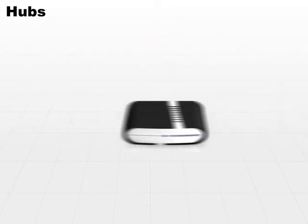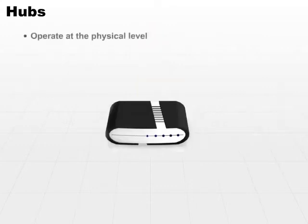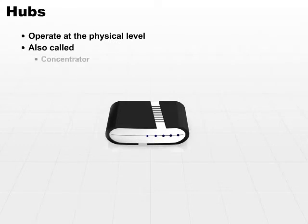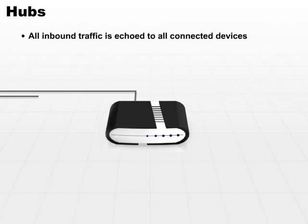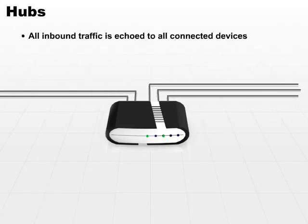Let's start off with the hub. The hub is a lowly device that operates at the physical level. Sometimes it's also referred to as a concentrator, a repeater, or a multi-station access unit, often referred to as a MAU. The way they work is that all inbound traffic is echoed to all the connected devices. So effectively, everything it hears, it repeats, kind of like young kids.